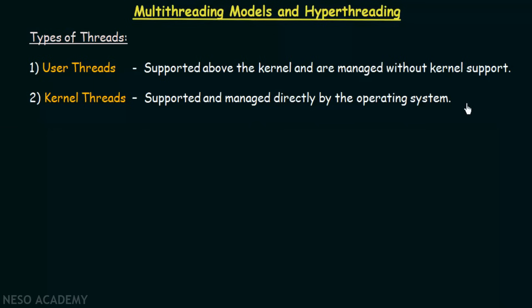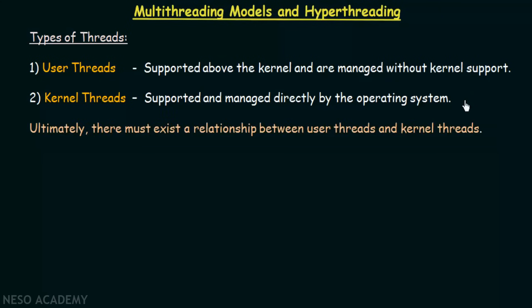When we study operating systems, we see that users are constantly interacting with the system and the operating system allows this to happen. Since we have two types of threads — user threads and kernel threads — for these two threads to function together, there must exist a relationship between them. We will see how to establish this relationship, and that is what we study in multithreading models.